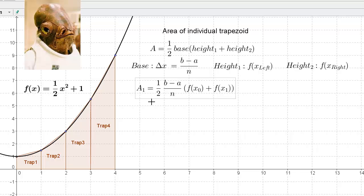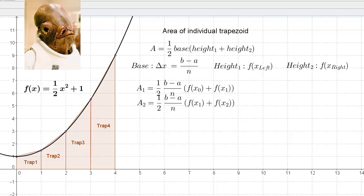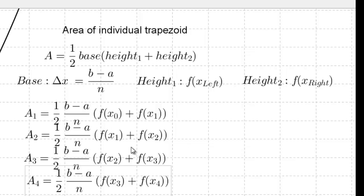When we put that together, the area of the first trapezoid here would be 1/2 (b - a)/n, one half of delta x the width, times the two heights added together, f(x₀) + f(x₁). We could do the same thing for the other three trapezoids. Notice each one, the left-hand point is the first number, f(x_left), and the right-hand point is f(x_right).